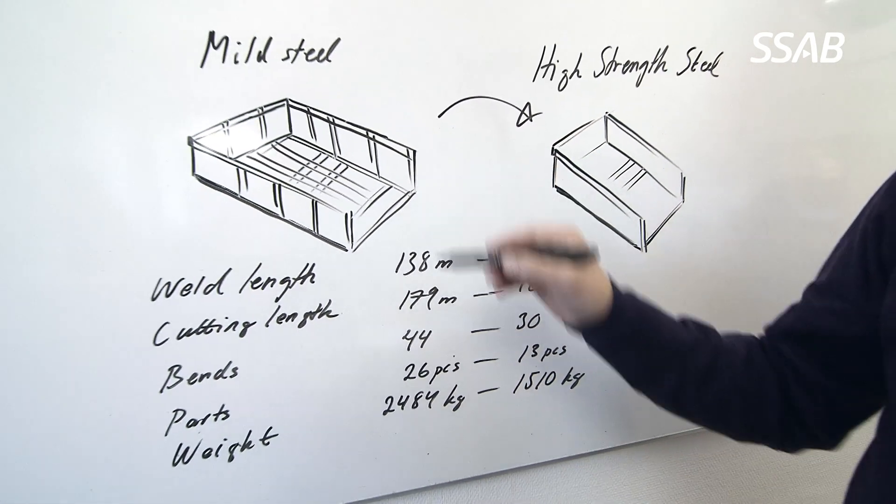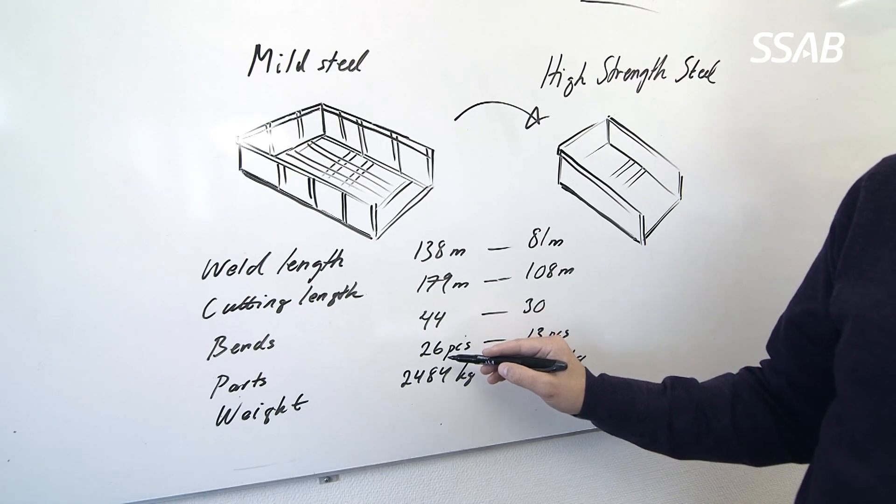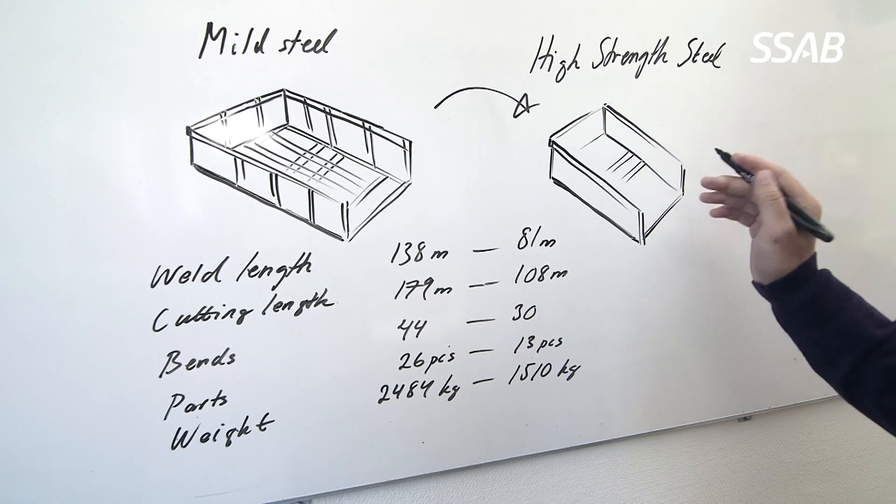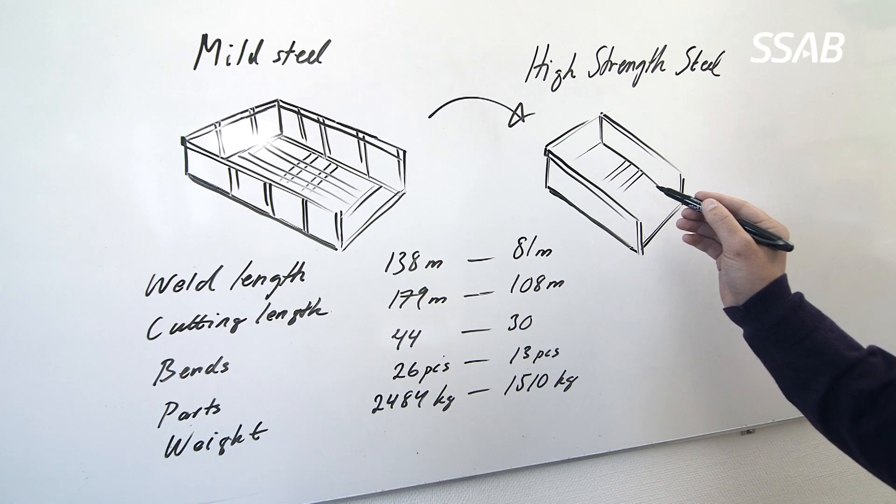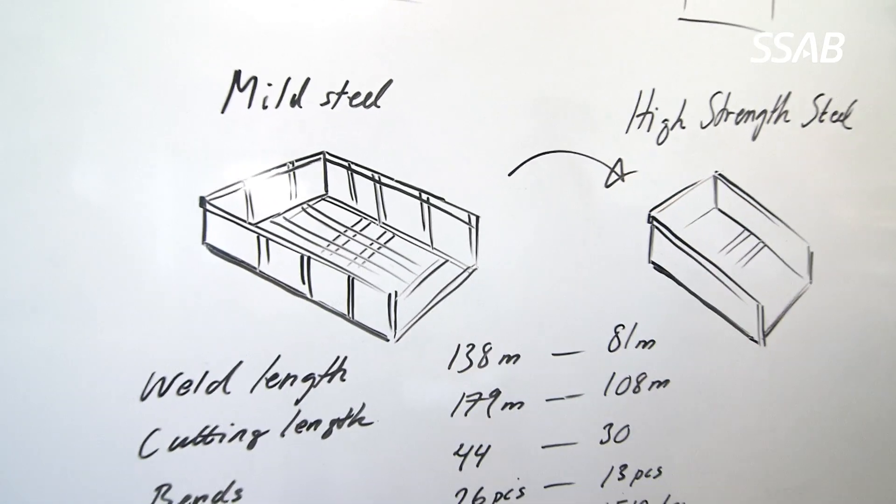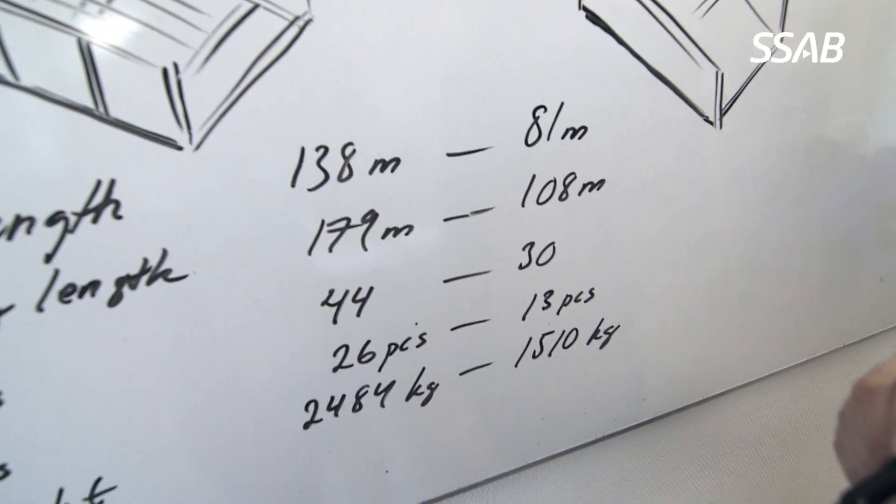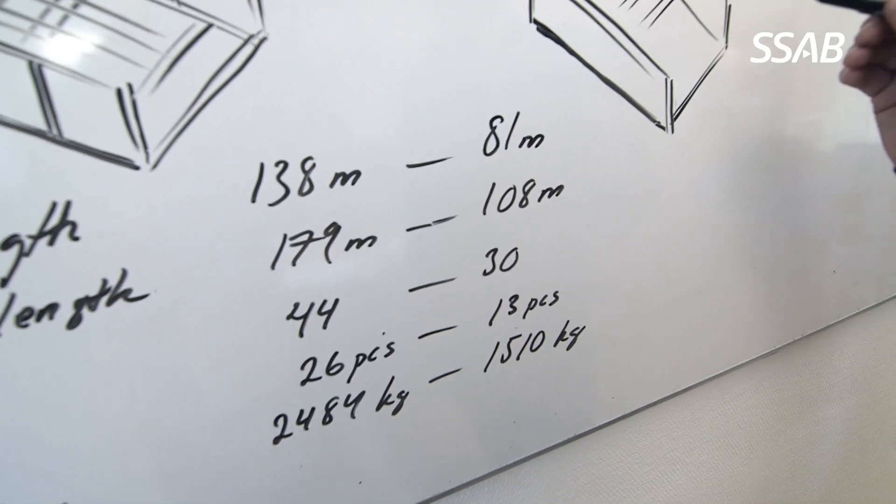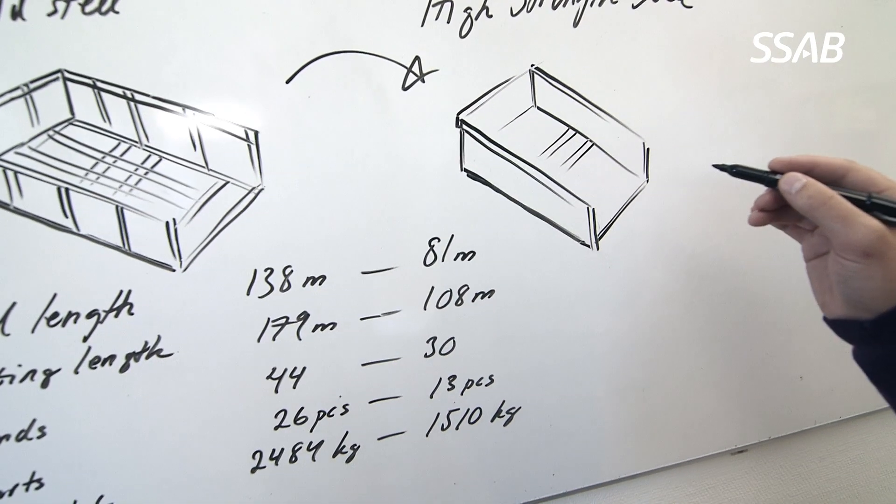The old one contains 26 different parts and in the new version we only use 13 different parts. The total weight of the old version is 2484 kilos and in the new version we use 1510 kilos.